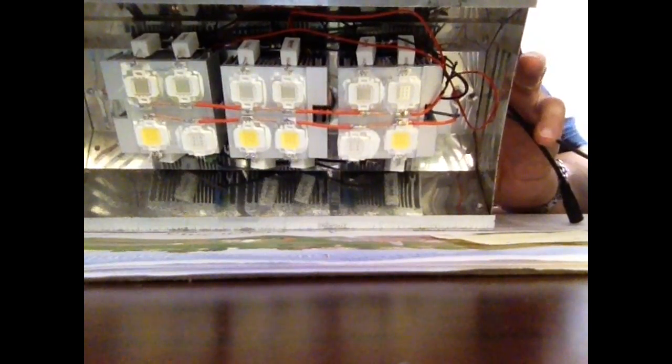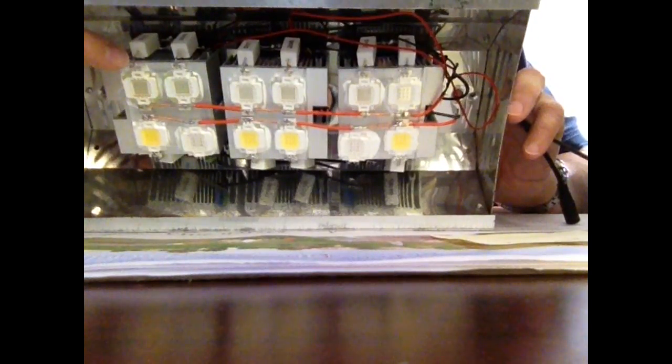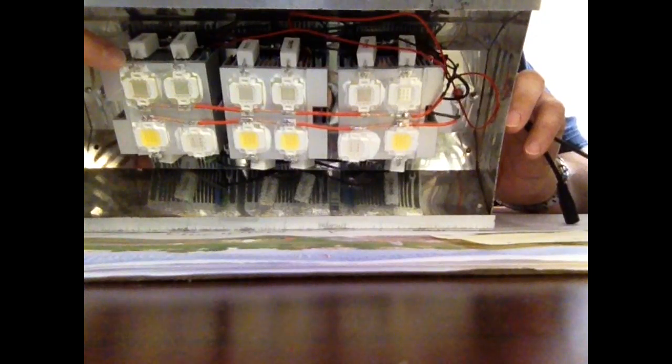Each of those are 10 watts a piece. Top row here are the actinic blues. I believe those are 455 to 470 nanometers.